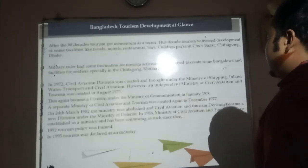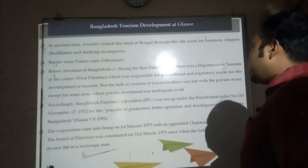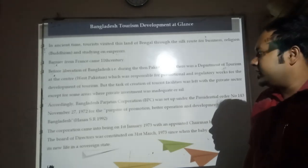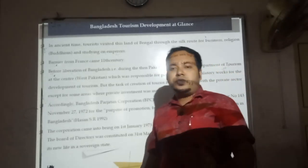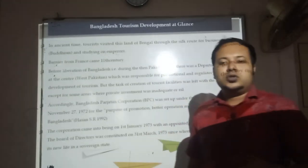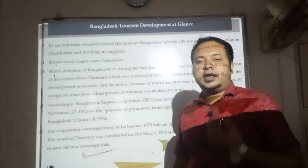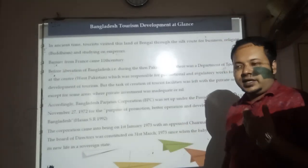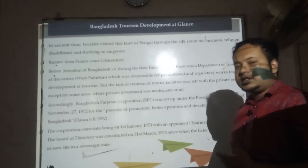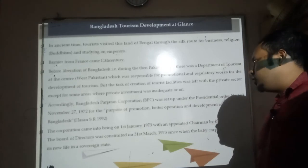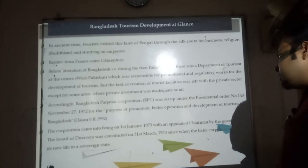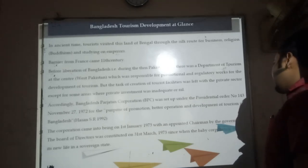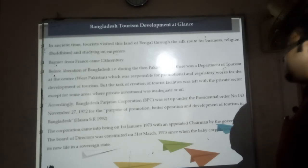According to the Bangladesh Parjatan Corporation, BPC was established by Presidential Order Number 143 on November 27, 1972, for the purpose of promotion and operational activities — to provide services to customers, provide facilities, and promote the tourism sector. The corporation came into being on 1st January 1973, with an appointed chairman and board of directors. By 31st March 1973, the corporation started its new life as a sovereign state.